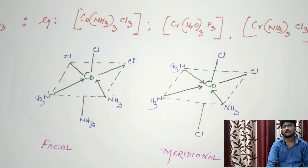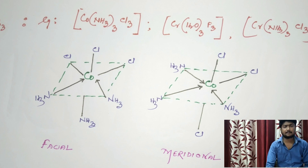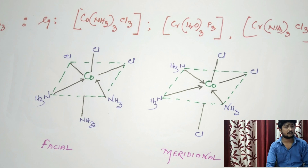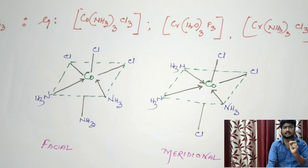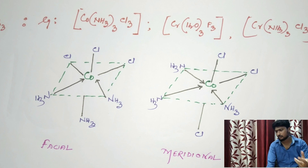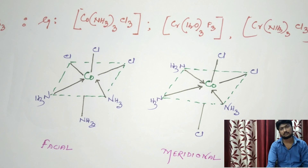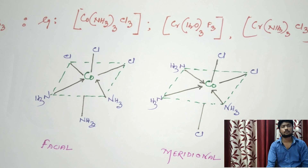Next, we will find the isomers of MA3B3, also a six-coordinated compound. For example, [Co(NH3)3Cl3]. We will not get a geometrical or optical isomerism in the conventional sense; instead we get a facial isomer and a meridional isomer. In a facial isomer, three ligands remain in one plane forming a face of the octahedron. In the meridional isomer, the plane created by three A or three B ligands cuts the octahedron into two halves.